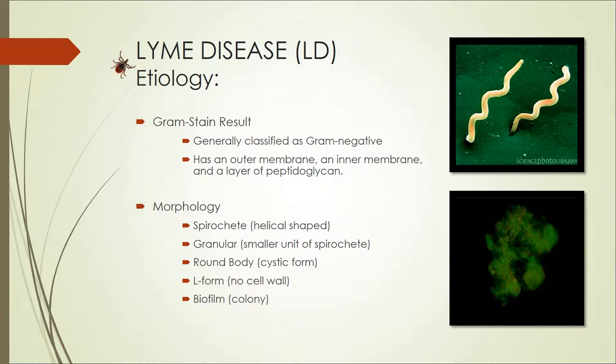Borrelia burgdorferi is most commonly known to have a spirochete or helical-shaped form, as shown in the top right. Recent research has shown that it can also morph into other forms, including granular, which are smaller units of the spirochete; round body, which is the cystic form; L-form, which has no cell wall; as well as biofilms, or colonies, which is pictured at the bottom right.